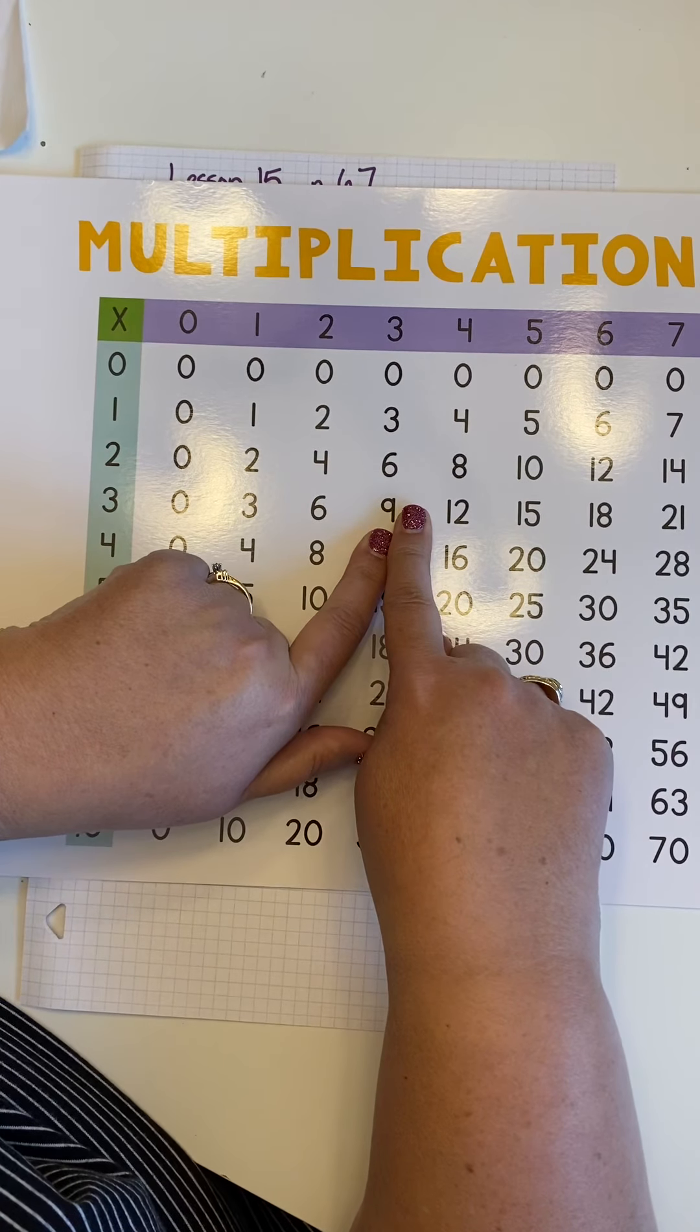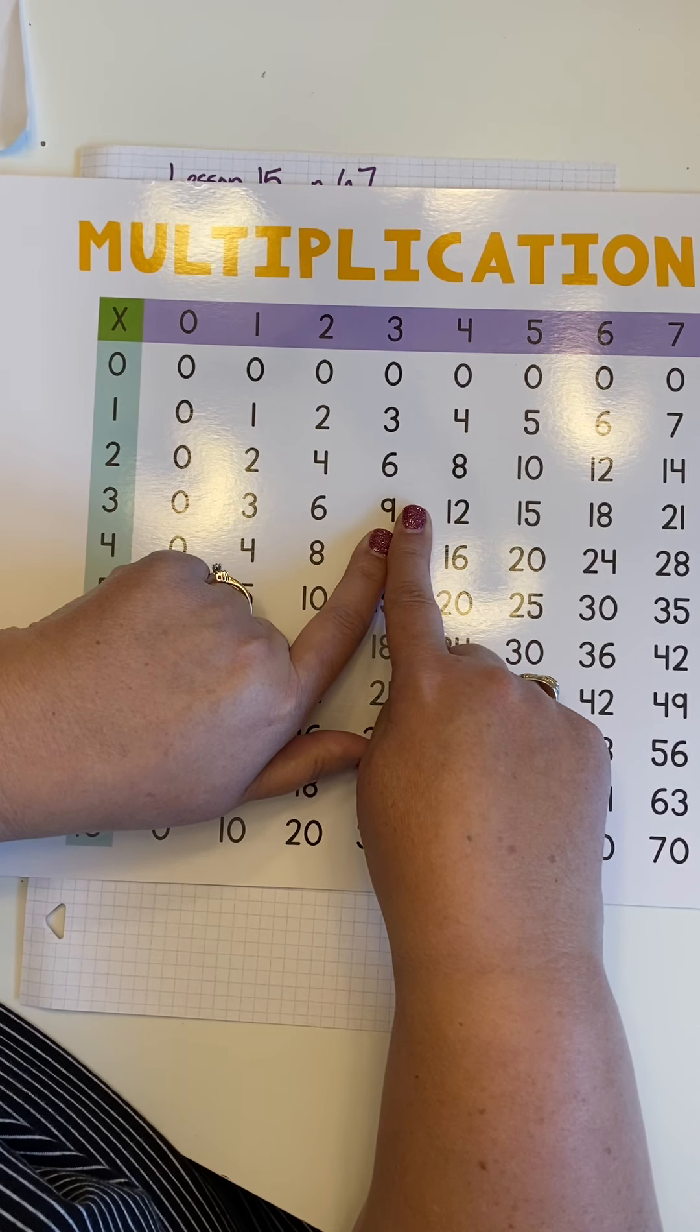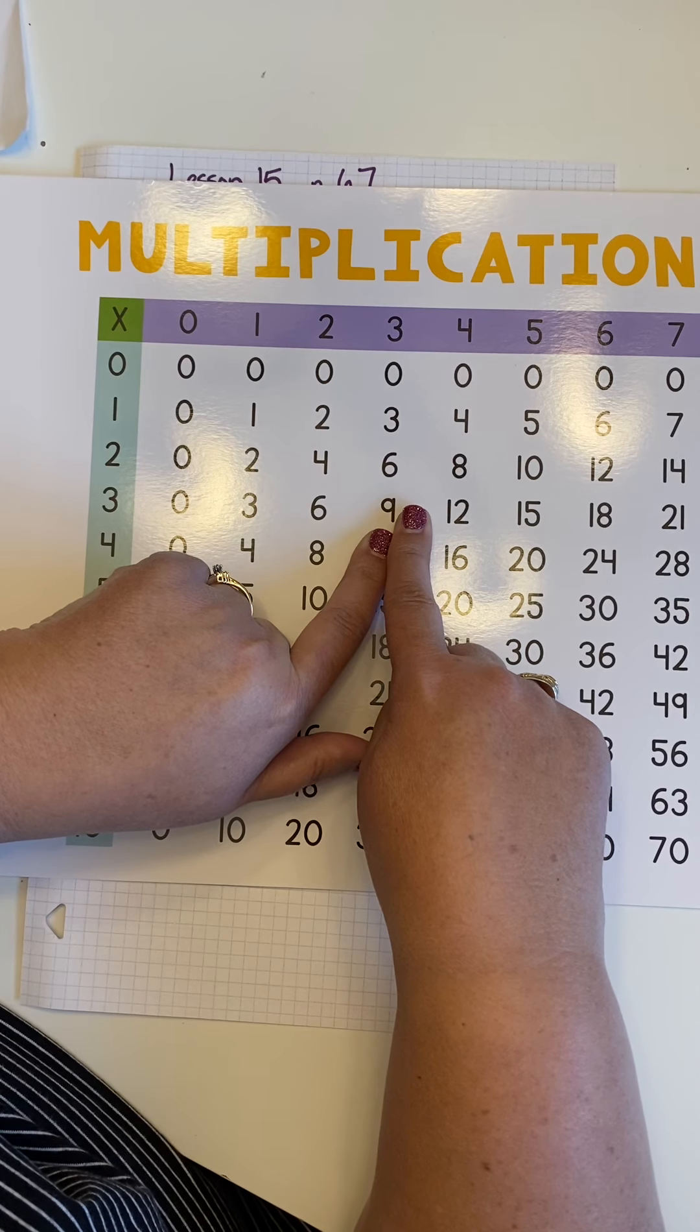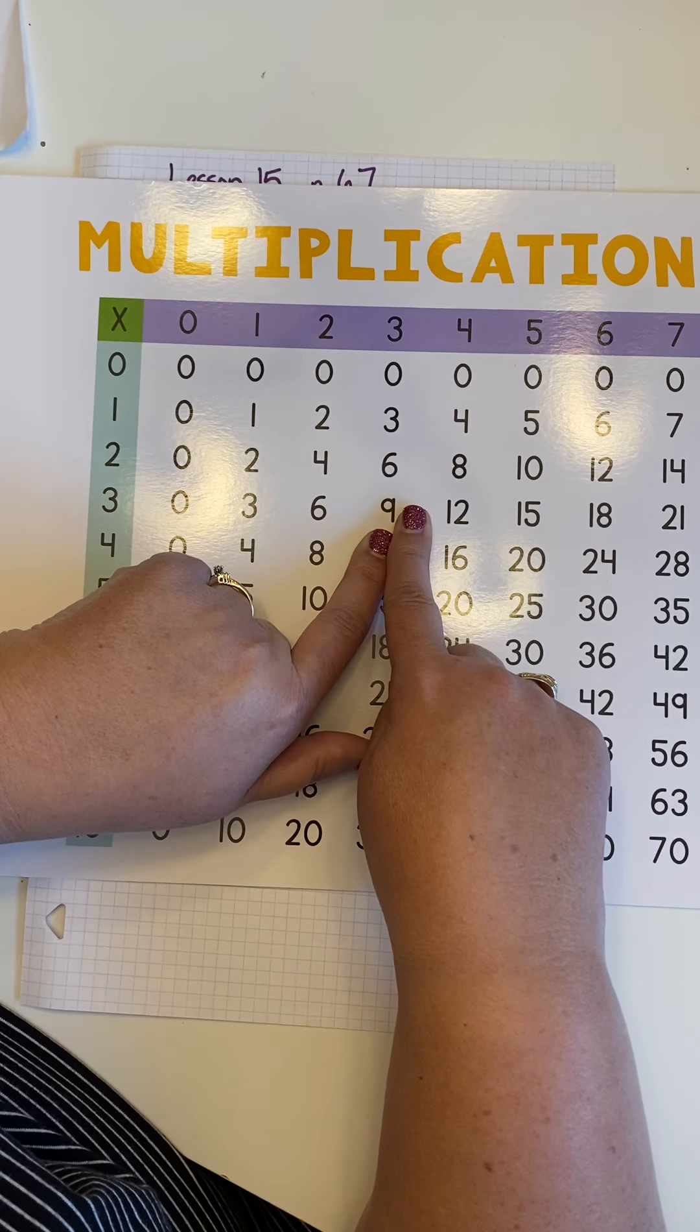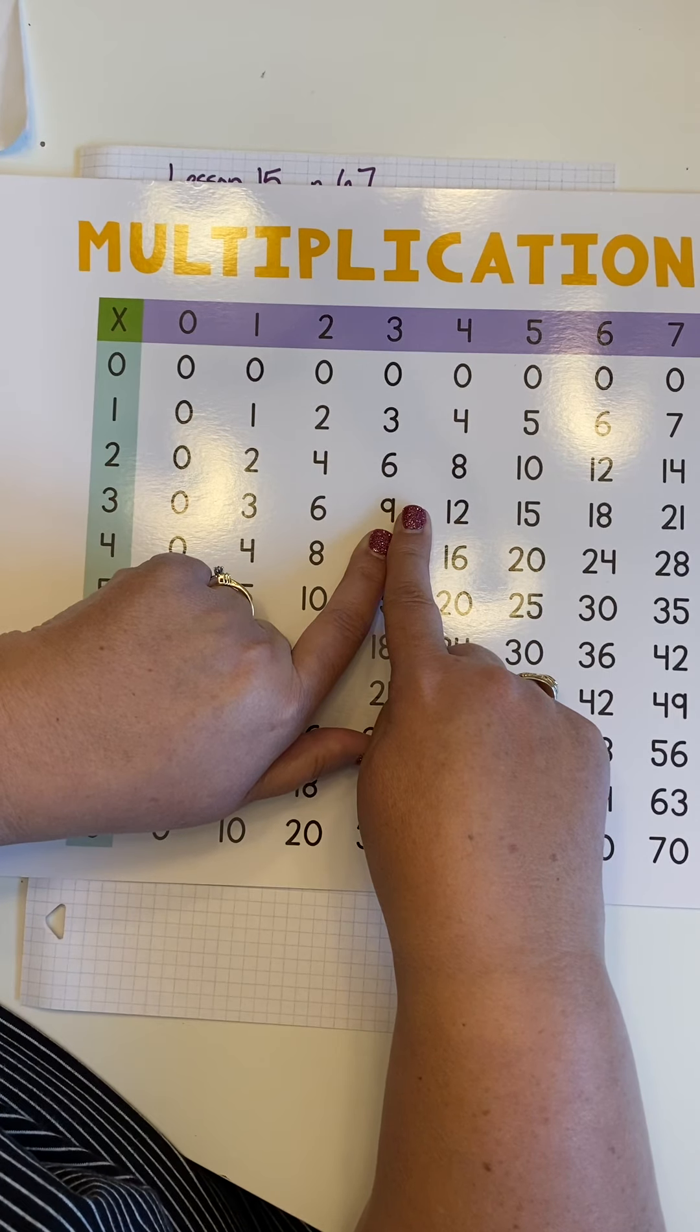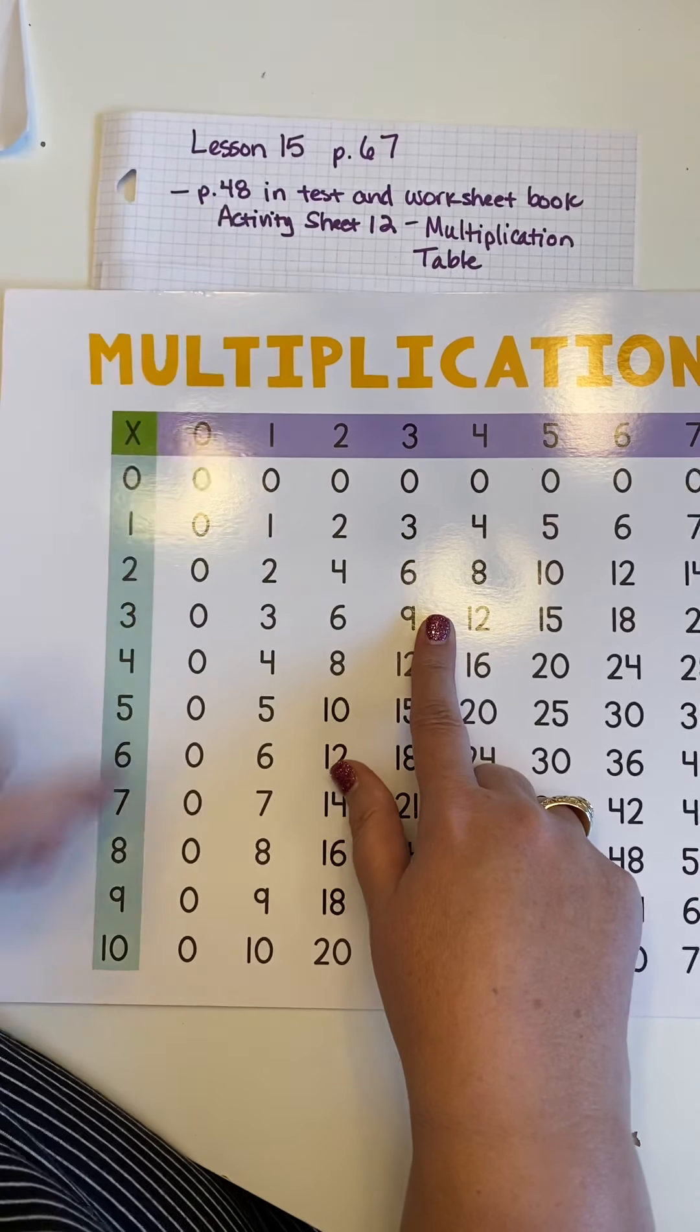Okay, we'll allow multiplication table use for probably until fall break in October, and then after that, we probably won't use those in class anymore. When I say in class, I'm talking about for your time test. I'll probably allow you to use them until October, and then after October, no more multiplication tables. So if you have one, or if you want to make the one that's located on page 48 in your test and worksheet book, you can do that.